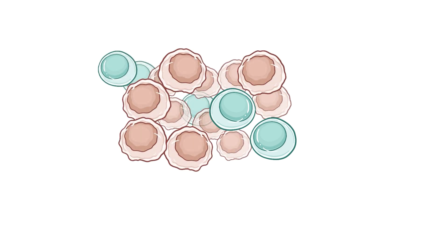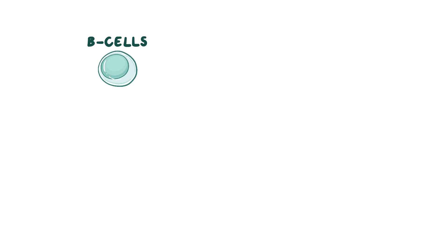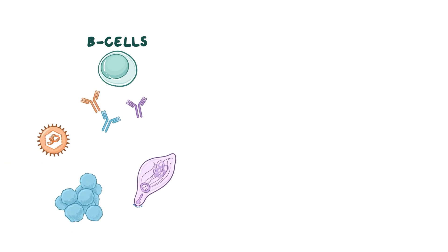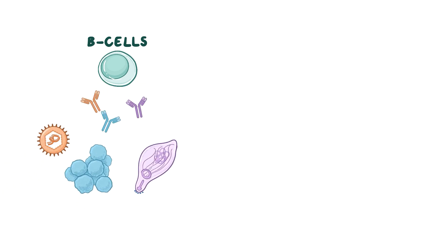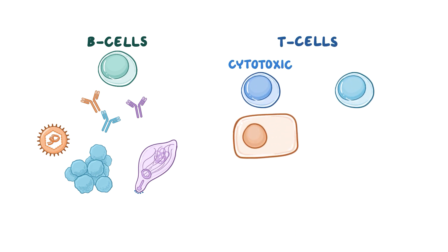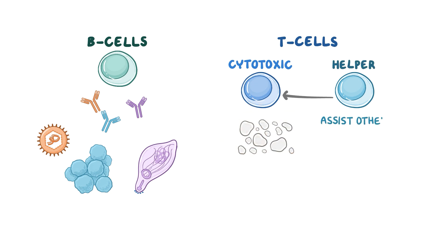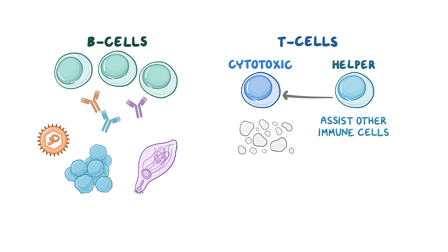Lymphocytes are a class of rapidly dividing cells and therefore tend to develop mutations more often. B-lymphocytes, or B-cells, work to develop antibodies toward invading microbes. There are also two types of T-lymphocytes, or T-cells. Cytotoxic T-cells can directly destroy other cells and helper T-cells assist other immune cells. Normally, if B-cells start to replicate out of control, it's the T-cells that keep them in check and keep the immune response organized.